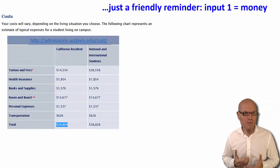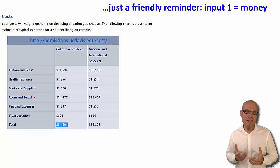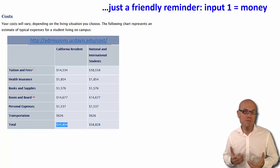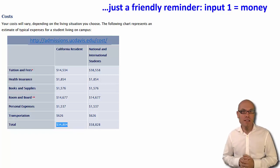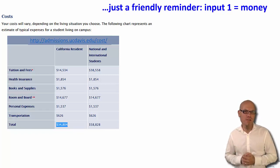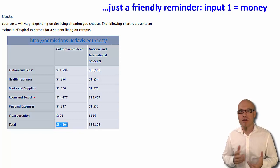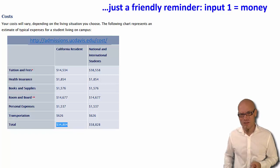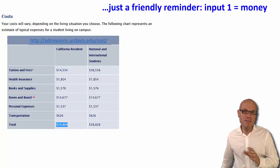Last time I checked on the UC Davis website, it was estimated that a California resident spends around $35,000 per year to study — that includes tuition, health insurance, books, room and board, and personal expenses. If you are a non-Californian or international student, it is estimated to cost $60,000 a year. But let's assume $35,000 a year.